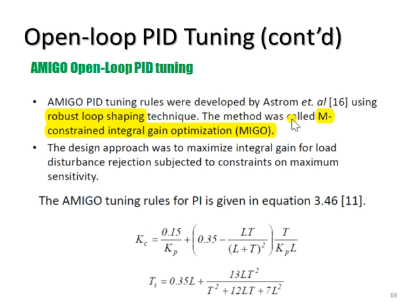The method was called M-Constrained Integral Gain Optimization or MIGO. The design approach was to maximize integral gain for load disturbance rejection subject to constraints on maximum sensitivity.